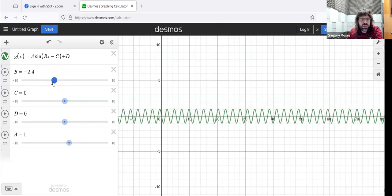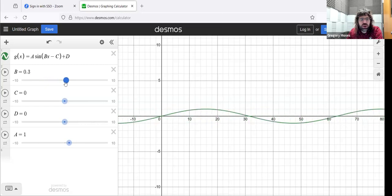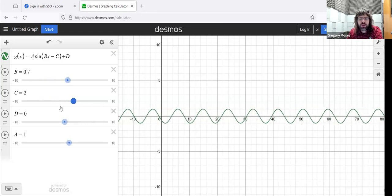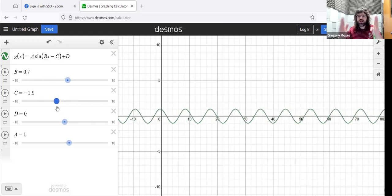And again, this B is the only thing that's controlling the period. If I mess around with this C, you see the curve moves horizontally, but the period, the width of the waves isn't changing.